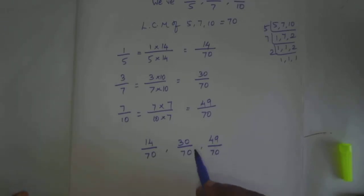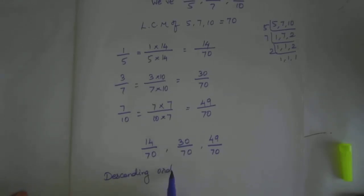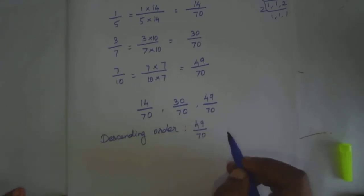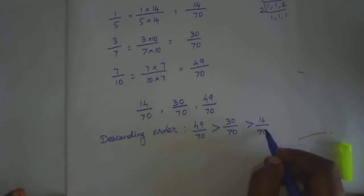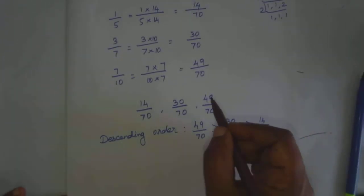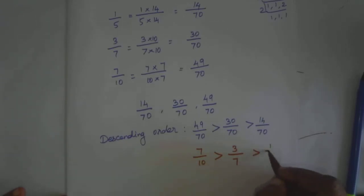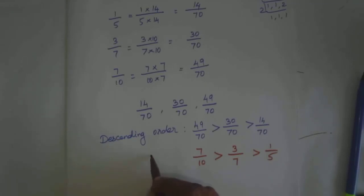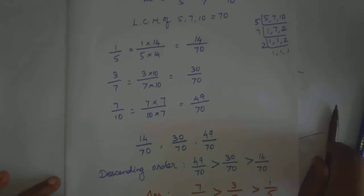Now write these numbers in descending order. Descending order is greater to smaller. All the denominators are the same, so we compare numerators. Descending order: first one is 49 by 70, which is greater than 30 by 70, which is greater than 14 by 70. Now, writing the original fraction values: 49 by 70 is 7 by 10, which is greater than 30 by 70 which is 3 by 7, which is greater than 14 by 70 which is 1 by 5. This is the solution.